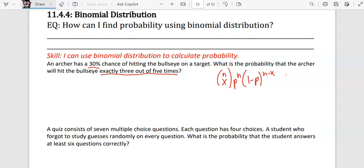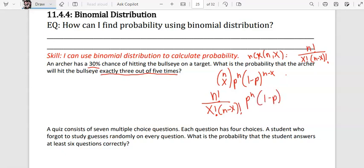Now, n choose x is actually the combination formula. It's going to be n factorial over x factorial times n minus x factorial. It's just another notation of writing it. So if we rewrite this formula, we have n factorial over x factorial times n minus x factorial times p to the x times the complement to the n minus x power.